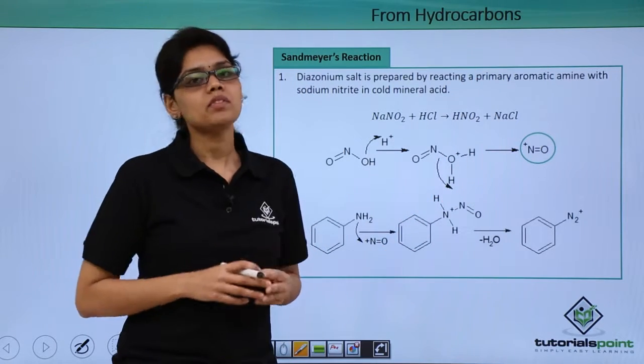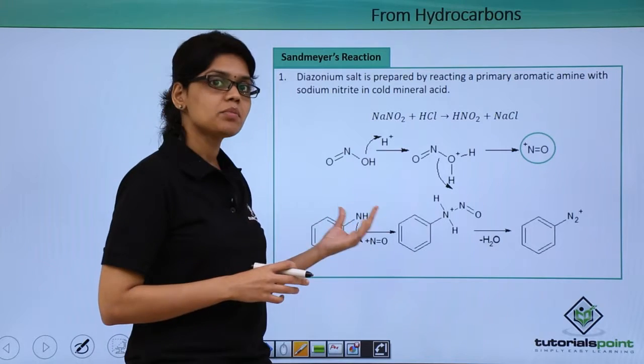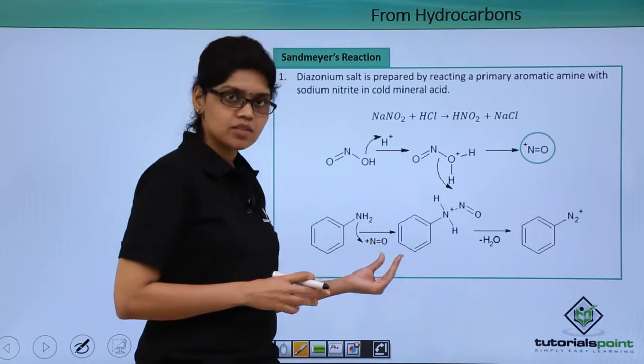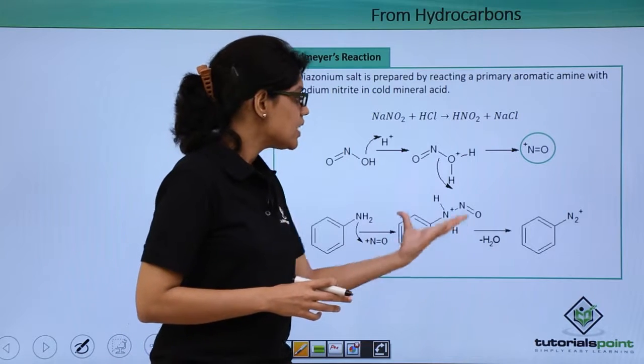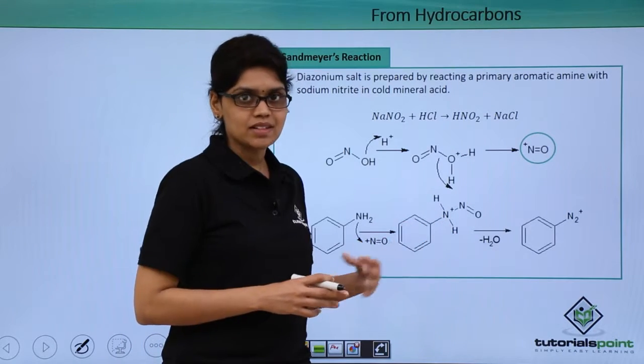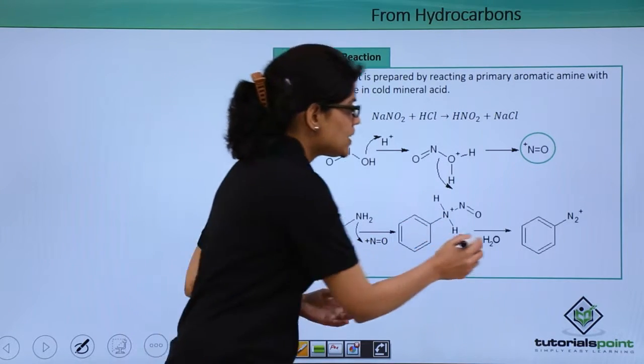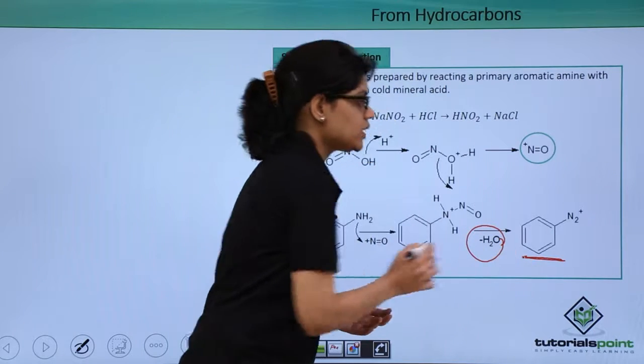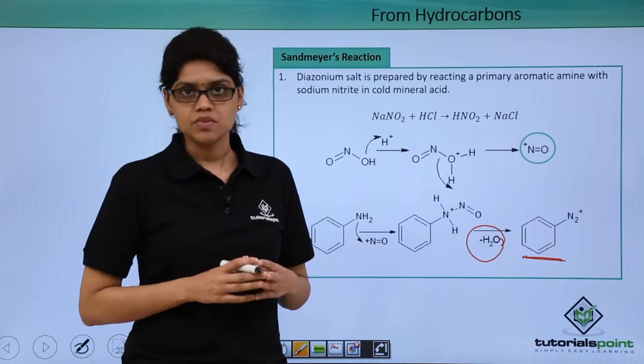Now the lone pair of electrons on nitrogen atom in the aromatic primary amine will react with this electrophile NO+ to give us an intermediate or a complex, from which with the elimination of water molecule you get the final product which is the diazonium salt.